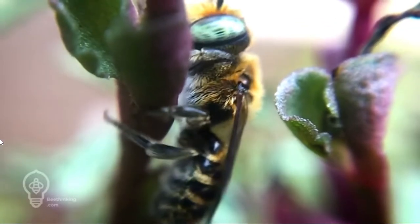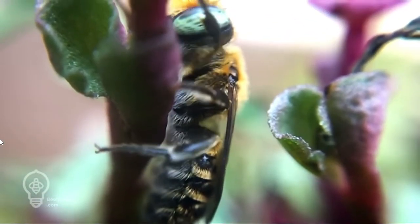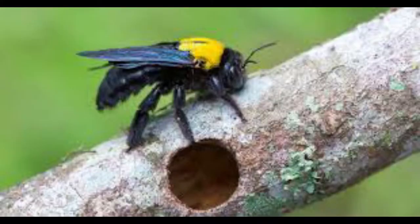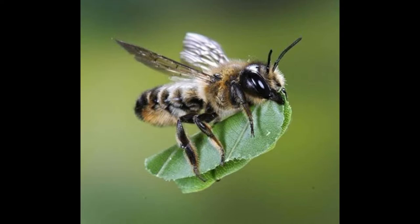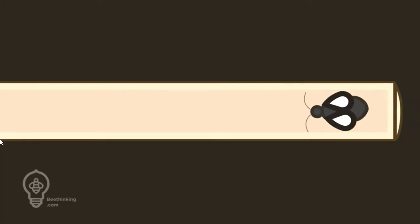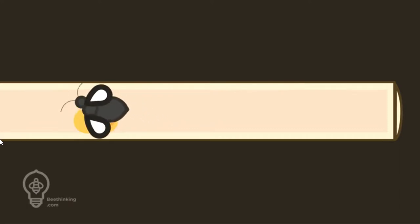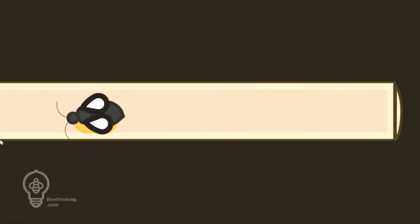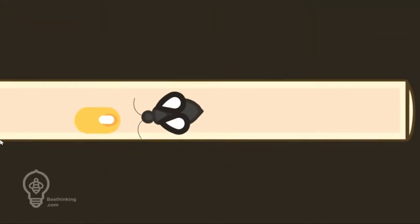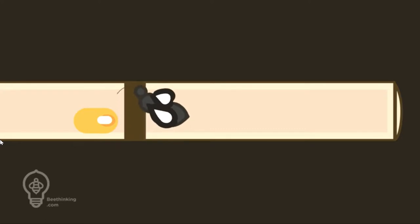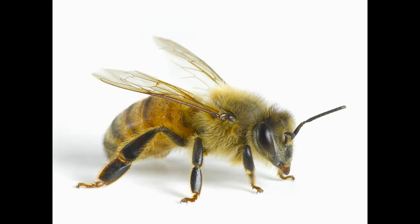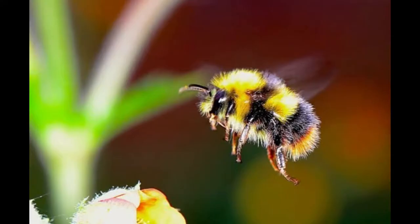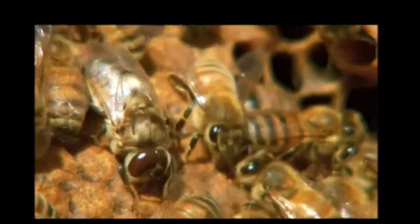Bees may be solitary or may live in various types of community. Bees like carpenter bees and leafcutter bees are solitary — they typically inhabit a nest they construct themselves and there is no division of labour. On the other hand, honey bees and bumble bees live in complex societies and are referred to as eusocial.